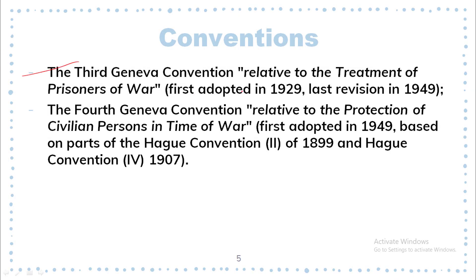The 3rd Geneva Convention relative to the treatment of prisoners of war. First adopted in 1929, last revision in 1949. The 4th Geneva Convention relative to the protection of civilian persons in time of war, first adopted in 1949, based on parts of Hague Convention 2 of 1899 and Hague Convention 4 of 1907.